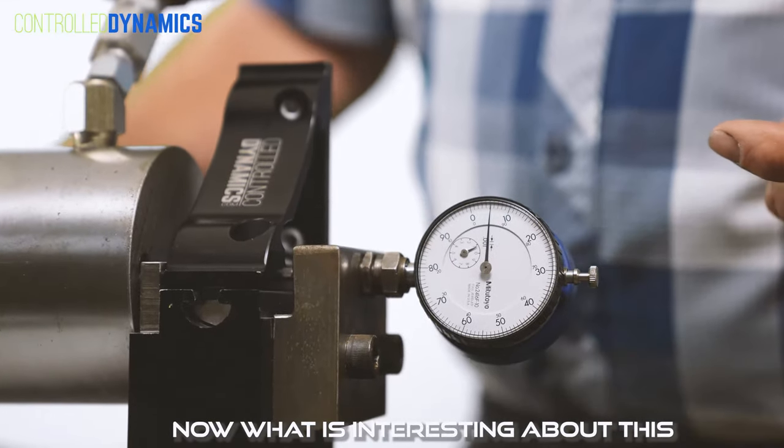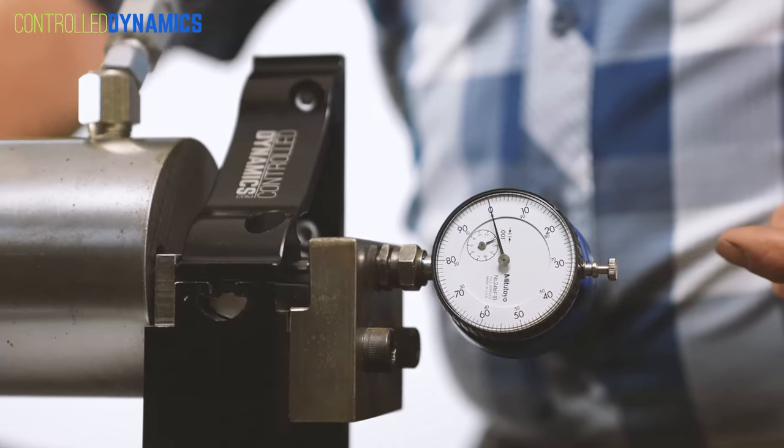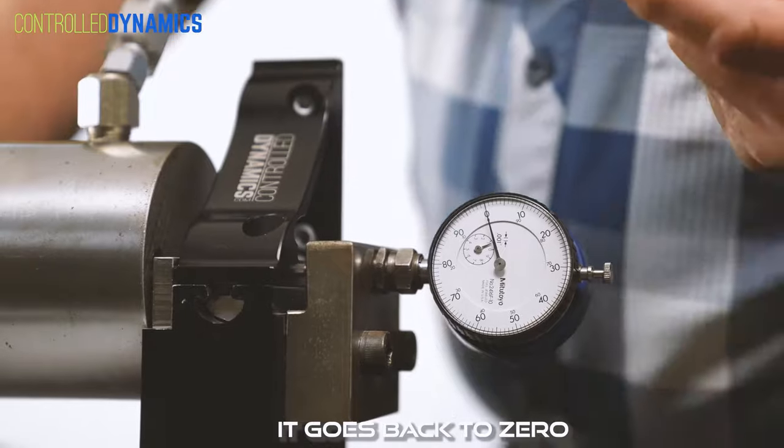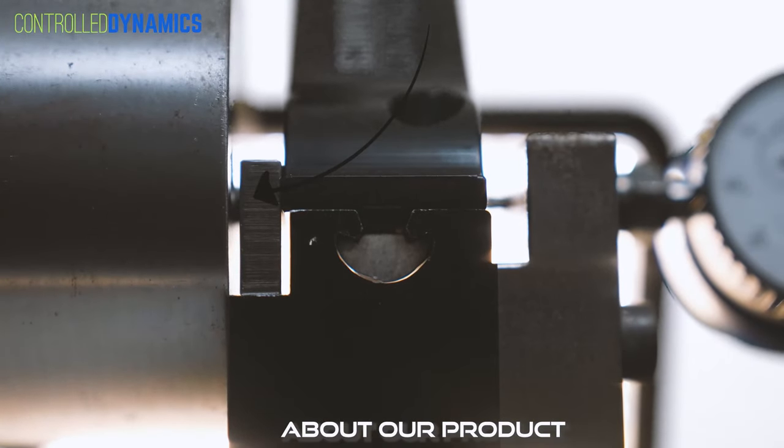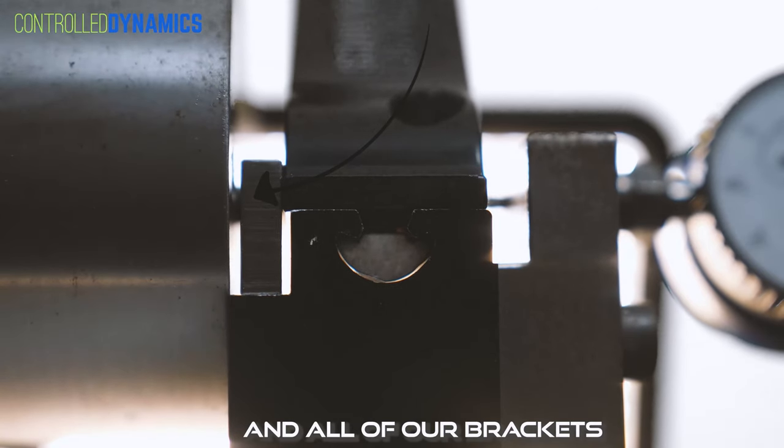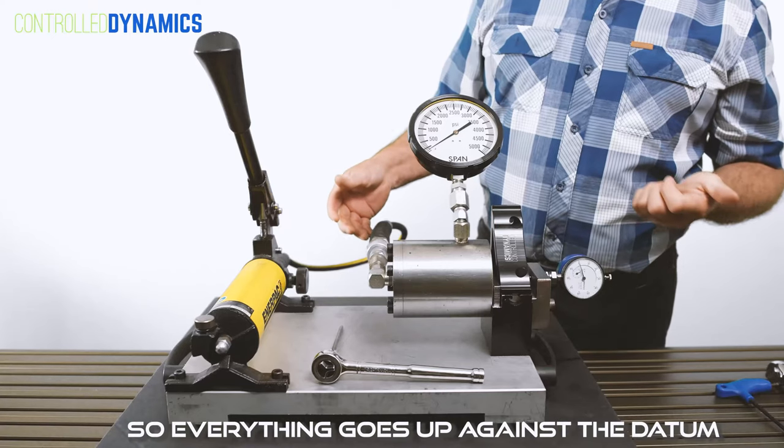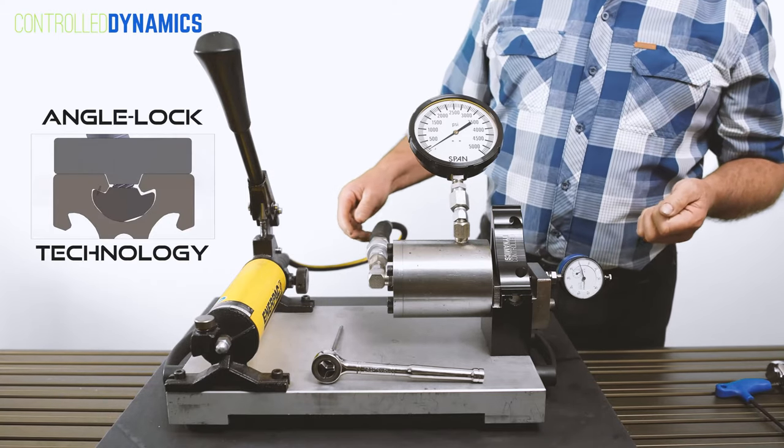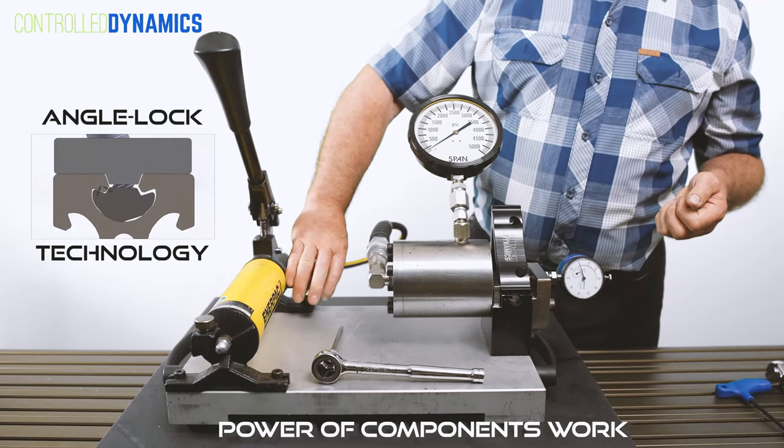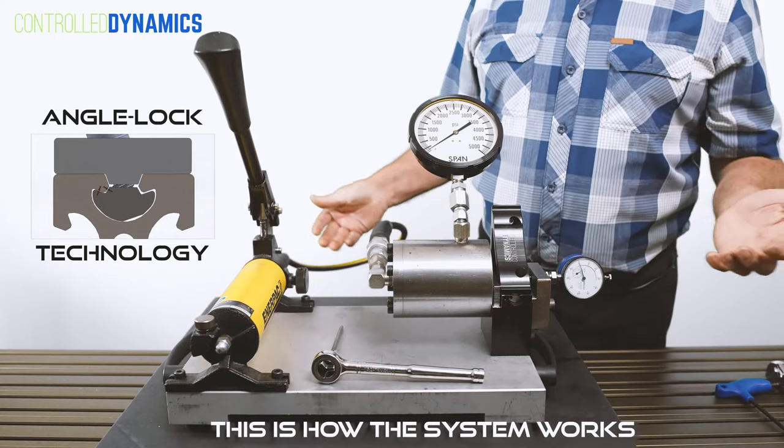Now what's interesting about this is when we release the pressure, it goes back to zero. That's what's interesting about our product - all of our brackets work this way. Everything goes up against the datum. We call it angle lock. It locks. So this is how our components work and how the system works.